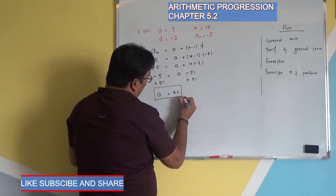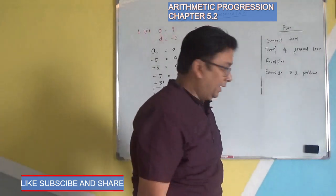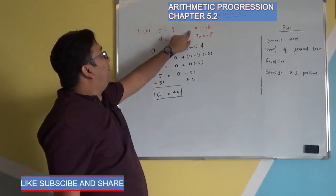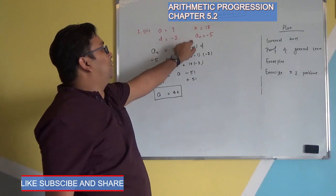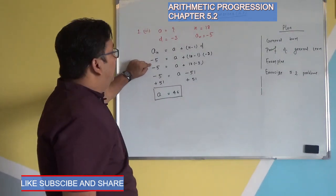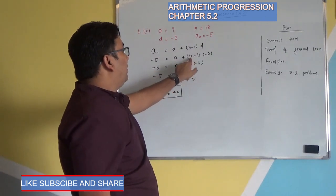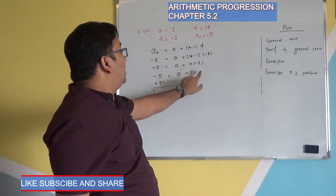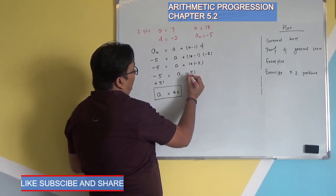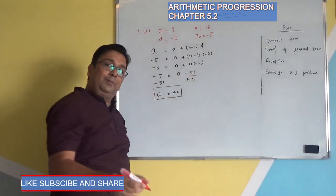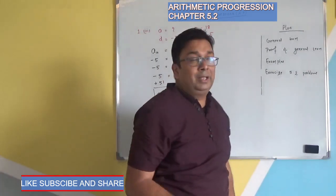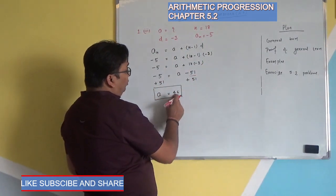After this, minus 5 equals A plus 17 into minus 3. Then minus 5 equals A minus 51, since plus times minus is minus, and 17 times 3 is 51. To find A, we add 51 to both sides. The 51 eliminates and A equals minus 5 plus 51, which is 46. So the first term coming out is 46. Thus A equals 46.